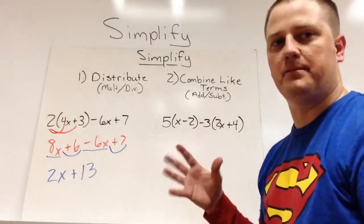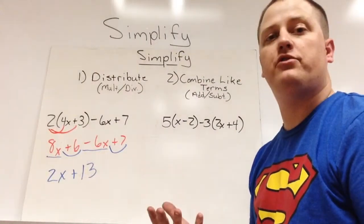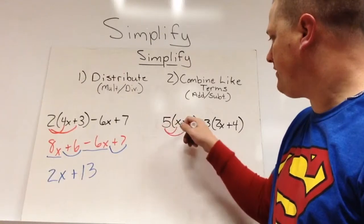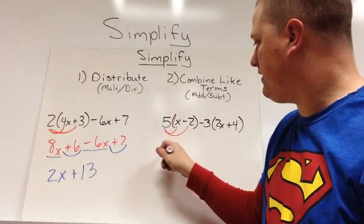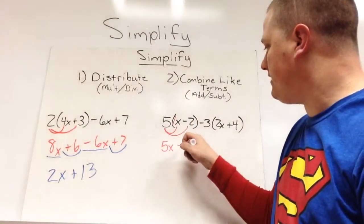Here we have two parenthesis, meaning there will be two times to distribute. 5 goes in there, the x needs a 1 in front, 5 times 1 is 5x. 5 times negative 2 is negative 10.